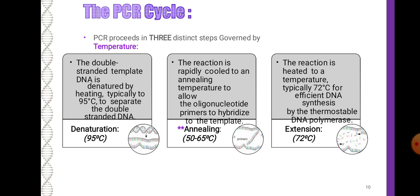In denaturation, the double-stranded template DNA is denatured by heating to 95 degrees Celsius to separate the double-stranded DNA. In annealing, the reaction is rapidly cooled to an annealing temperature to allow the oligonucleotide primers to hybridize to the template. In extension, the reaction is heated to typically 72 degrees Celsius for efficient DNA synthesis by the thermostable DNA polymerase.